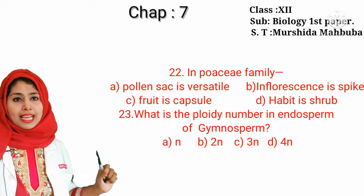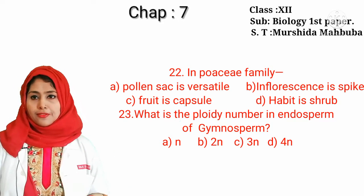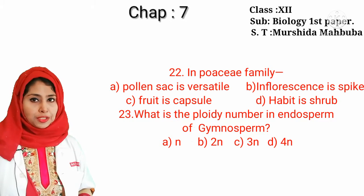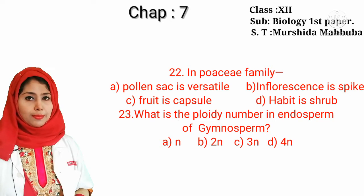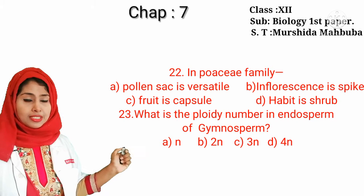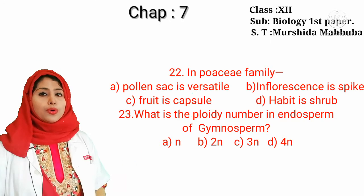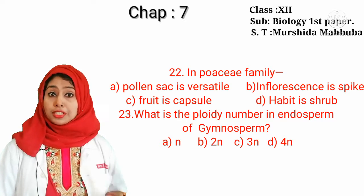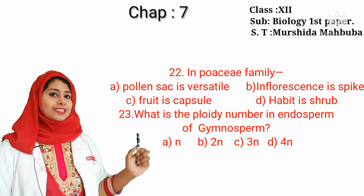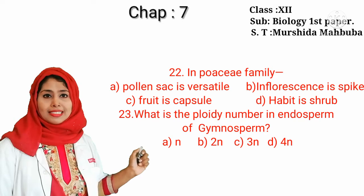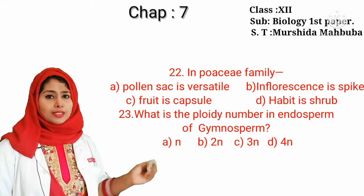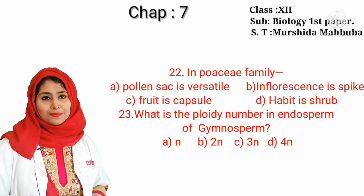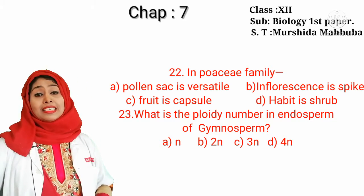Our next question: in Poaceae family, the pollen sac is versatile, inflorescence is spikelet, fruit is capsule, habit is shrub — which is correct? The correct answer is inflorescence is spikelet. What is the ploidy number of endosperm of gymnosperm? The ploidy number is haploid, because endosperm is formed before fertilization.